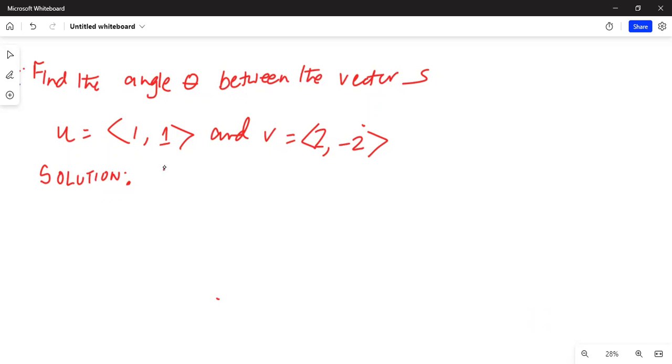So first we will find the dot product of vector u and v. u·v is equal to 1 times 2 plus 1 times minus 2, which is equal to 1 times 2 is 2,